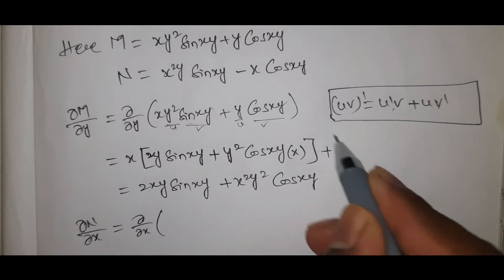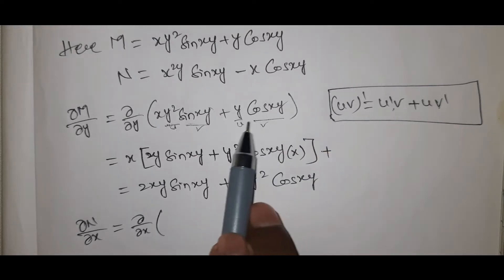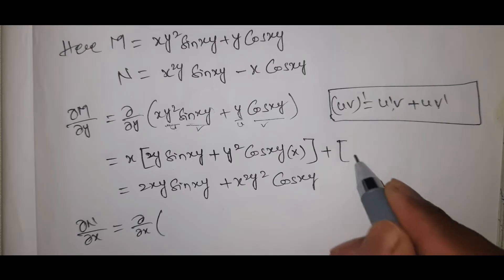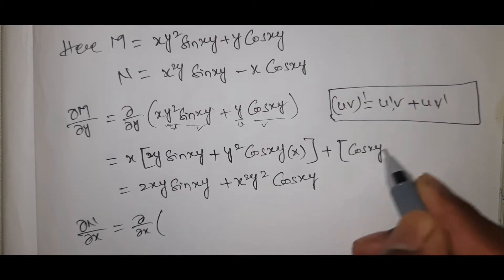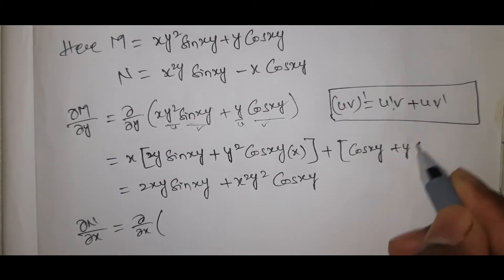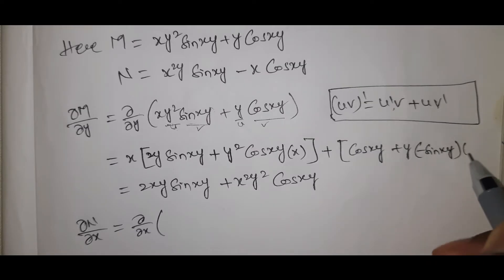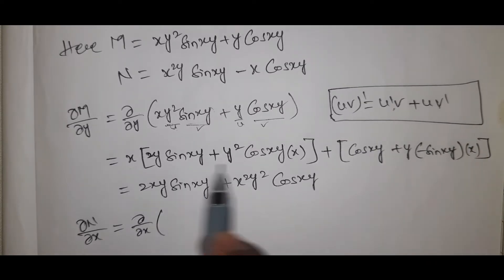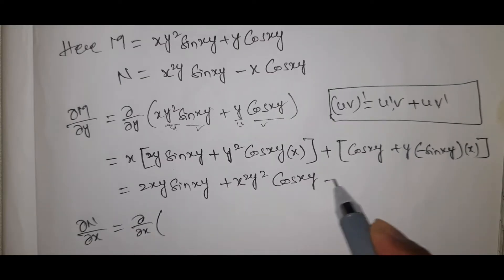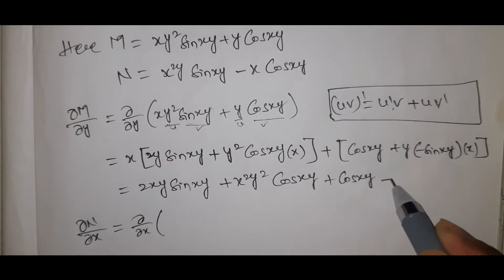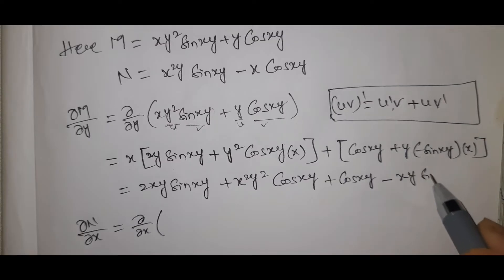For the second term, differentiating y·cos(xy): using product rule, we get 1·cos(xy) plus y·(−sin(xy))·x, which gives cos(xy) minus xy·sin(xy). So ∂M/∂y equals 2xy·sin(xy) plus x²y²·cos(xy) plus cos(xy) minus xy·sin(xy).